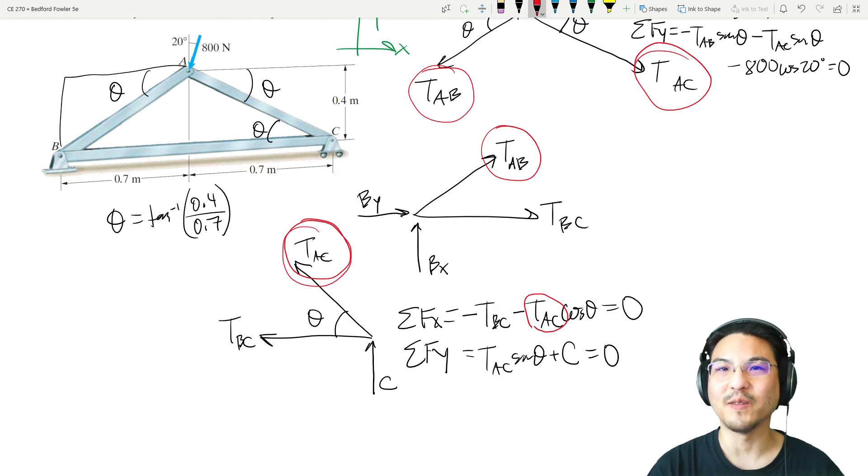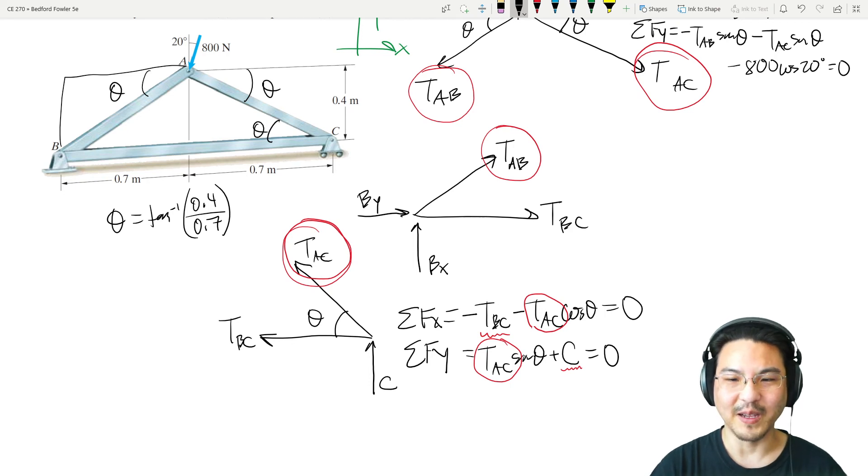We already have this number from the previous free body diagram, so that means there are only these two unknowns. So that's straightforward to solve. C is negative TAC sine theta and then TBC is negative TAC cosine theta. So now we know both of these answers.